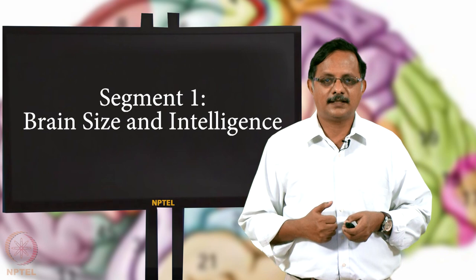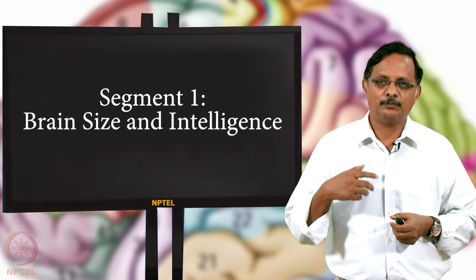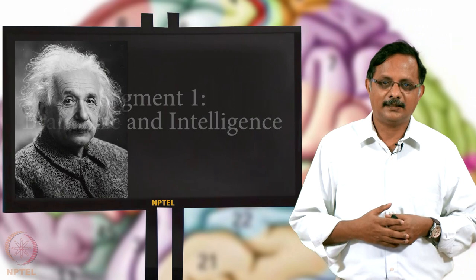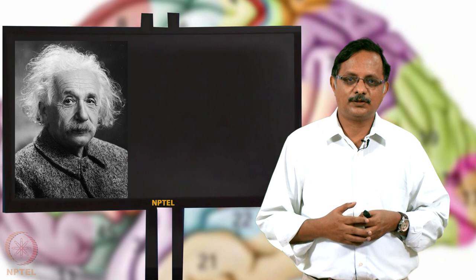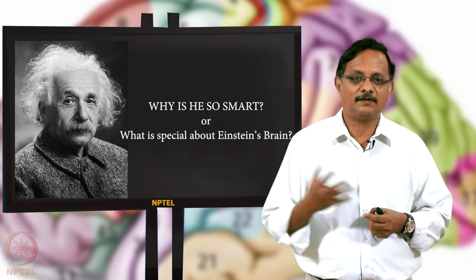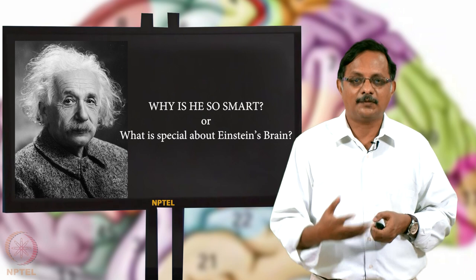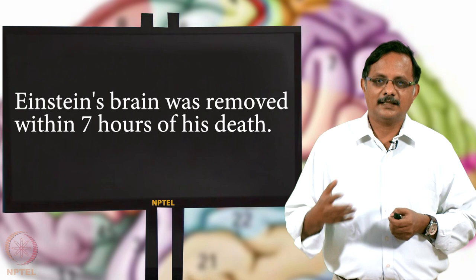Let us start with brain size and intelligence. When you think of intelligence, the first name that pops into mind is probably Albert Einstein — one of the greatest geniuses of our times. People have wondered what makes him so intelligent and whether his brain is something different.